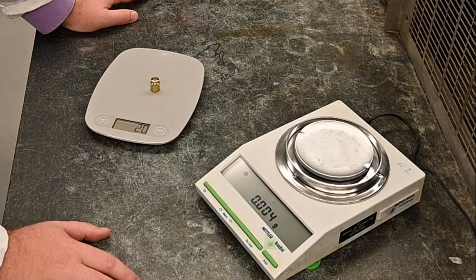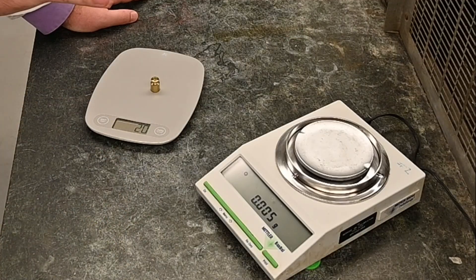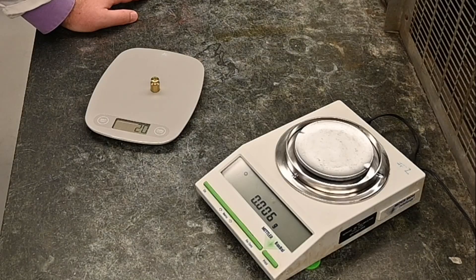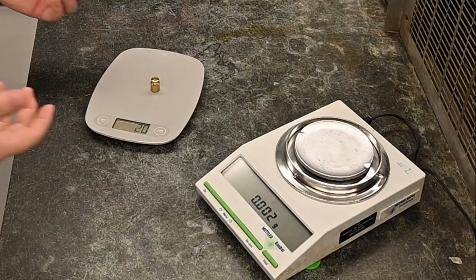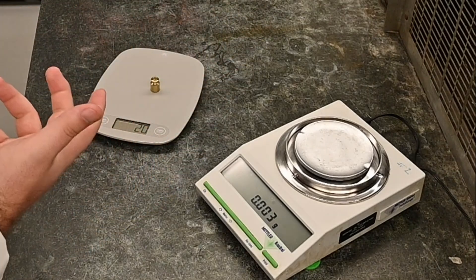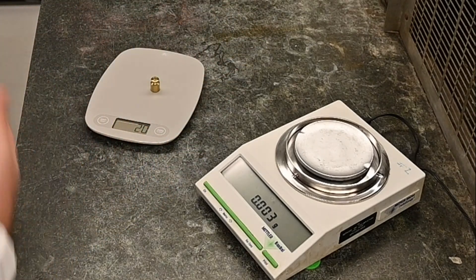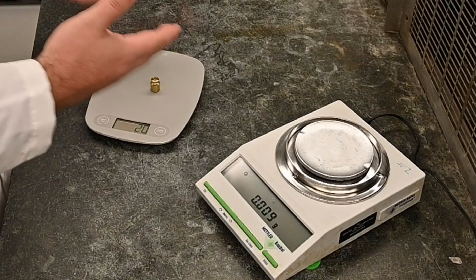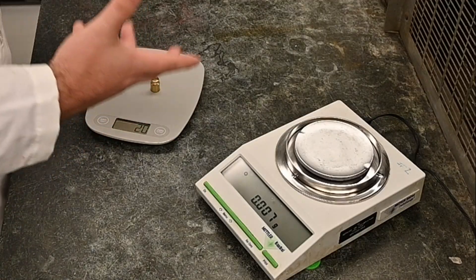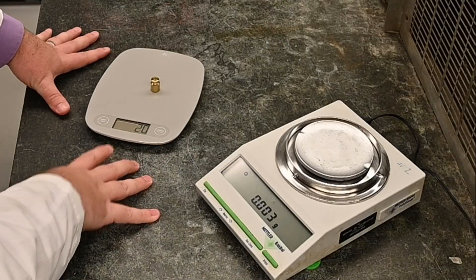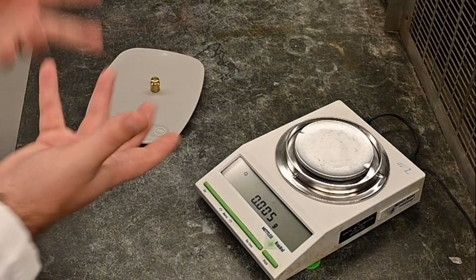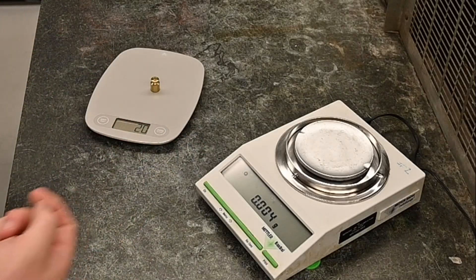But what if you wanted to measure something that was like a liquid or a loose solid like sand or something like that? Well, then you would need a container. The problem is if you put the container on there and try to measure the liquid with it, what's going to end up happening is you're going to measure the container with it. So what do you do?